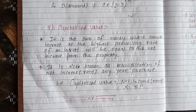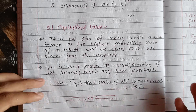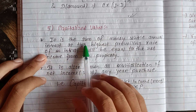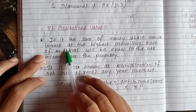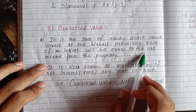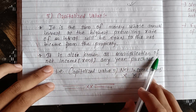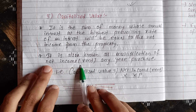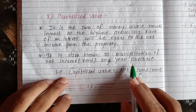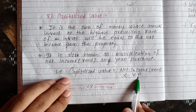Capitalized value is the sum of money which, at the highest prevailing rate of interest, will be equal to the net income from the property. It is also known as the multiplication of net income and year purchase: Capitalized Value = Net Income (or Net Rent) × Year Purchase.